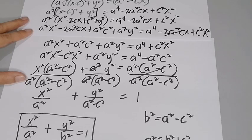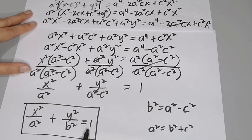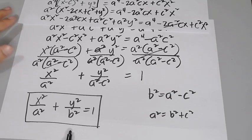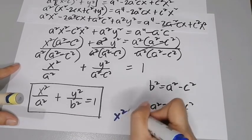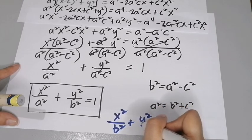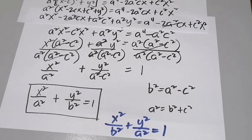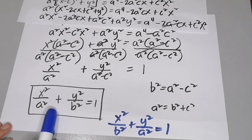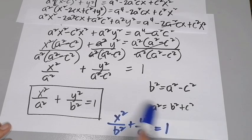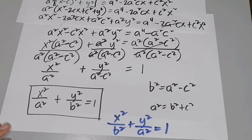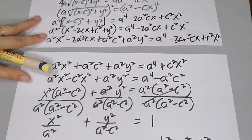The resulting equation x²/a² + y²/b² = 1 is the equation of an ellipse whose center is at the origin and whose foci are on the x-axis. When the foci are on the y-axis, the equation is x²/b² + y²/a² = 1. For the first equation, the major axis is horizontal and the minor axis is vertical. For the second, the major axis is vertical and the minor axis is horizontal. This is how we derive the standard equation of an ellipse. Thank you.